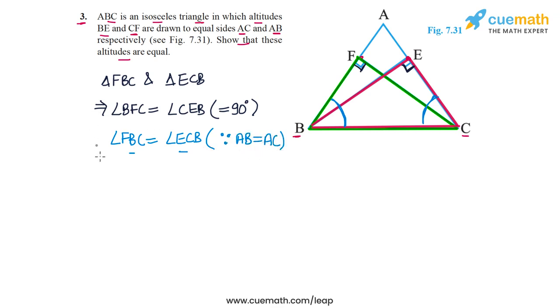So two angle pairs are equal, and now we just need to look for a side pair. And for that we note that BC is common to both triangles. So we can say BC is equal to BC because this is common to both the triangles. So we have two angle pairs and one side pair equal.